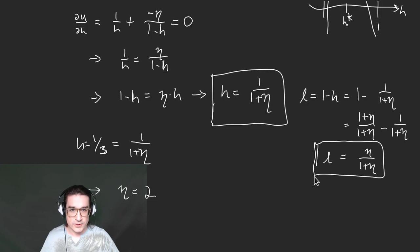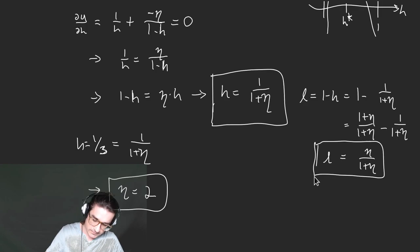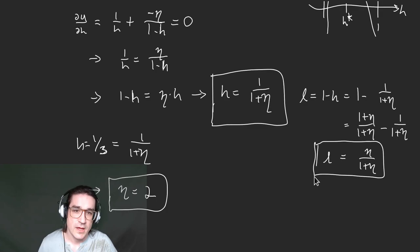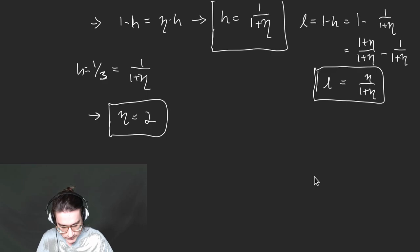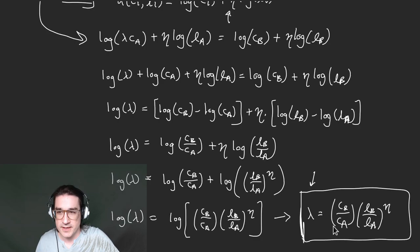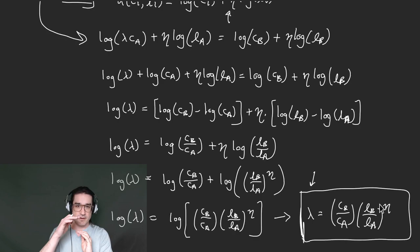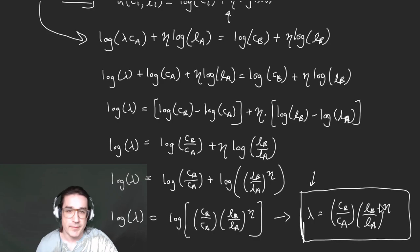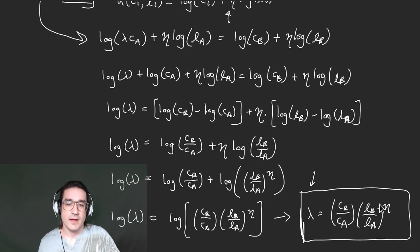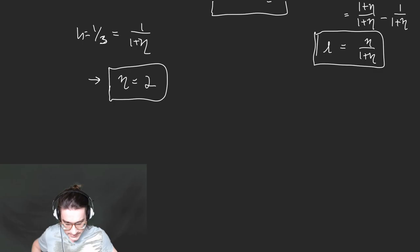With η ≈ 2, we can use this in our lambda formula. To compute the compensating variation between two countries, you look at the ratio of consumption and the ratio of leisure — but you square the leisure ratio because η=2. Squaring amplifies the leisure differences: a proportional difference in leisure gets squared, making it roughly twice as impactful. The larger eta is, the more you amplify those leisure differences.